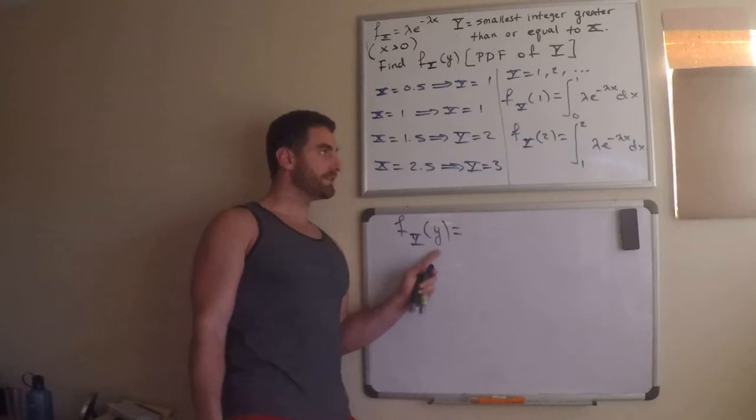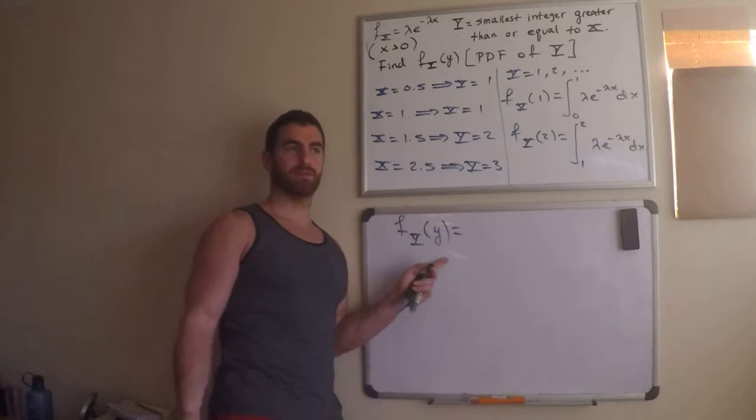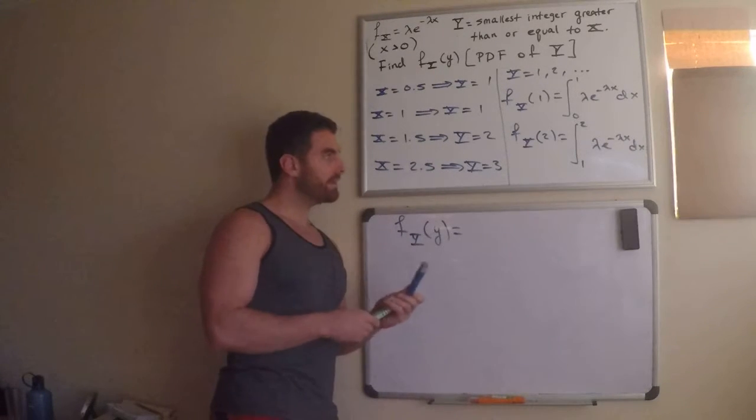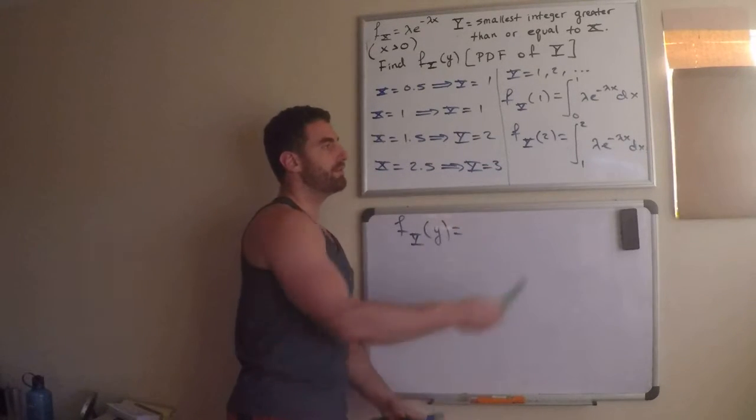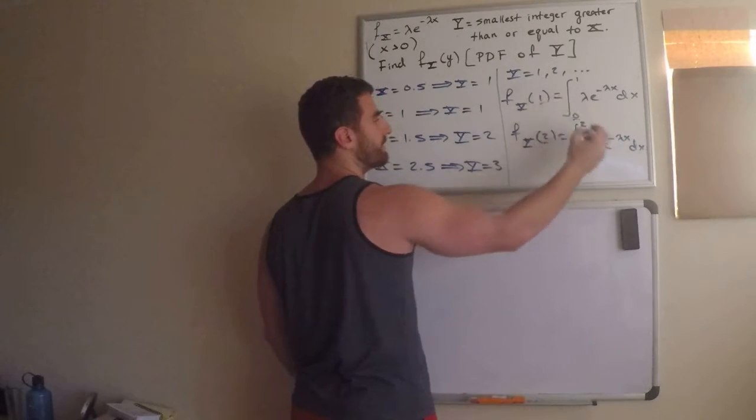I want F_y of y. I don't want probability 1 and 2. I want probability y equals y. I want the PDF. Look at the pattern, though. I mean, if I did probability y equals 3, it would go from 2 to 3. So, this number, this is 1 less. This is 1 less.